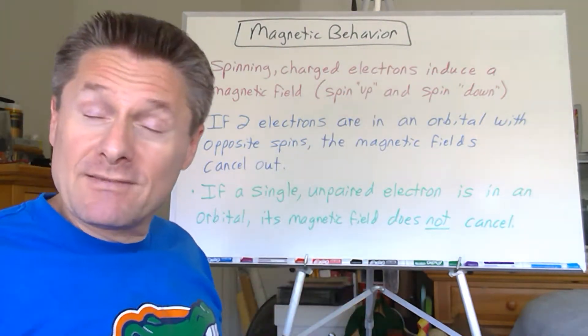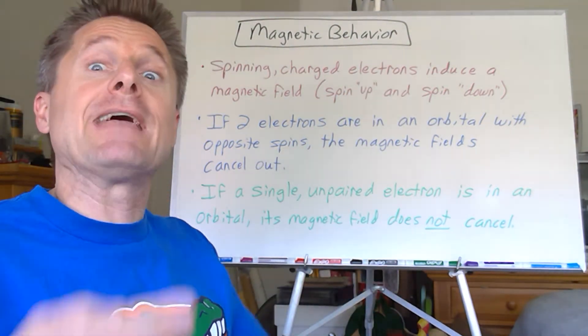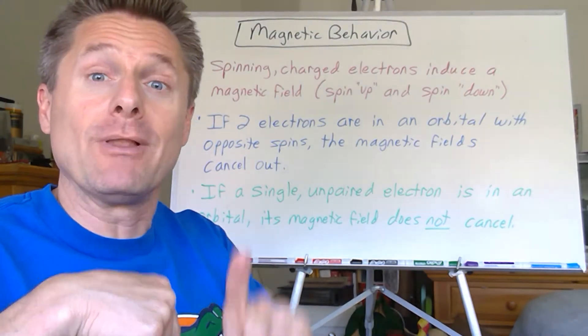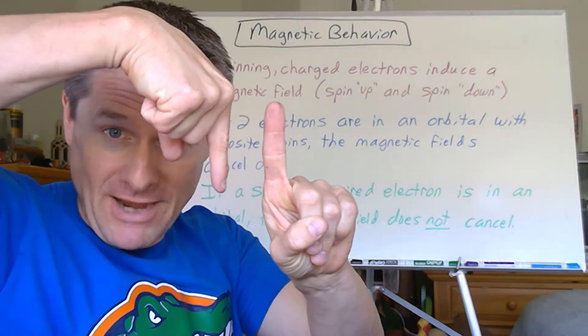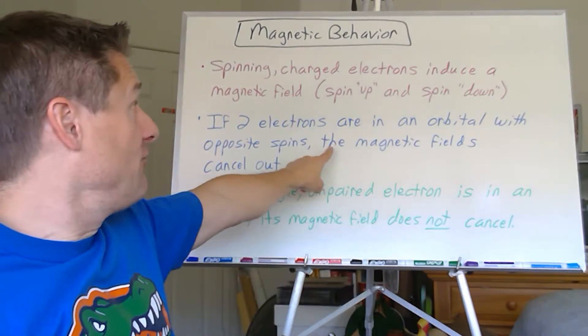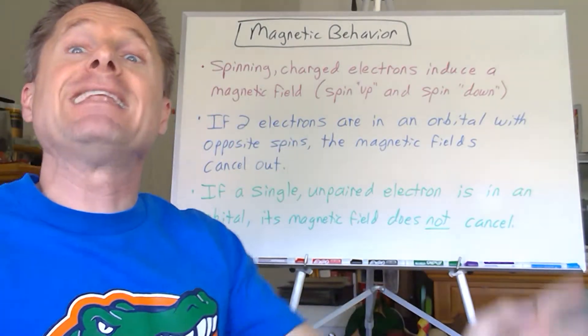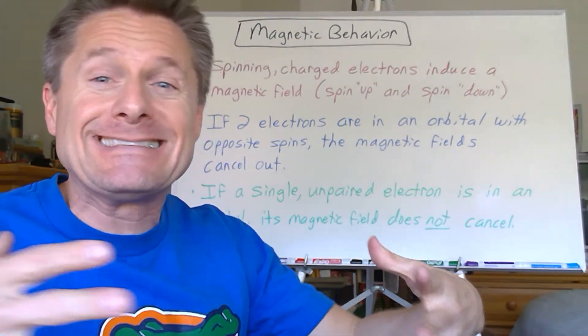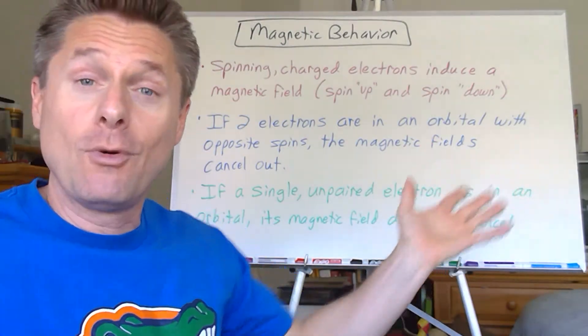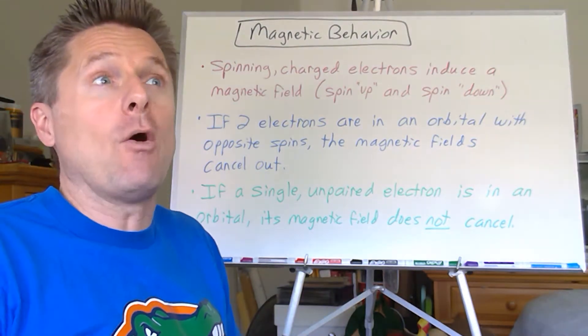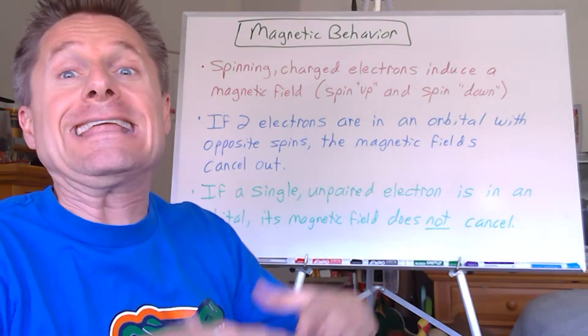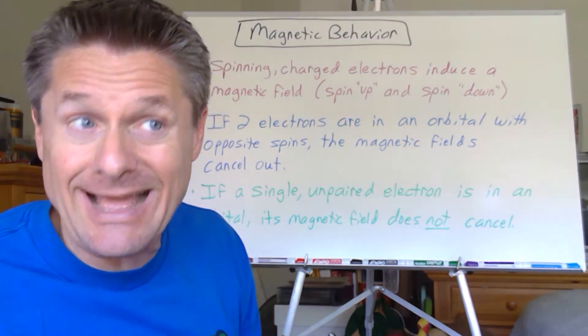Because of the Pauli exclusion principle, we can have two electrons in an orbital as long as one has ms +1/2 and the other has ms -1/2, opposite spins. If you have two electrons in an orbital with opposite spins, their magnetic fields align oppositely and they cancel out. No more magnetic field for that particular orbital.